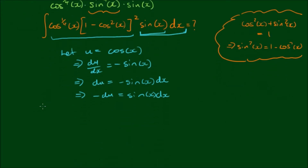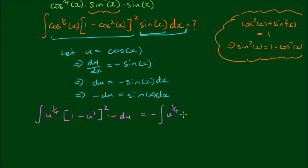Making the substitutions: cosine becomes u, so we have u to the quarter power by (1 minus u squared) all squared, and sine of x dx equals negative du. The negative comes out the front. Let's expand these terms — keeping u to the quarter power, and binomially expanding the second term: 1 minus 2u squared plus u to the fourth power du.